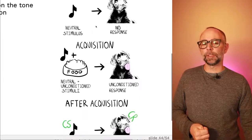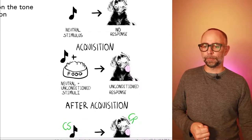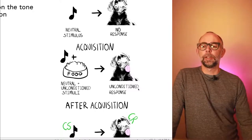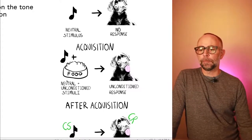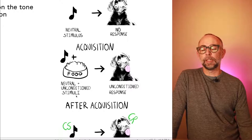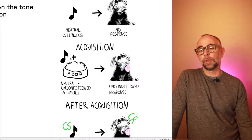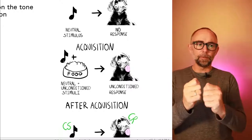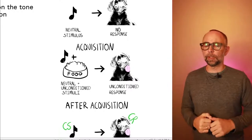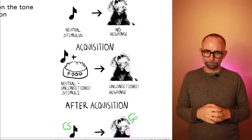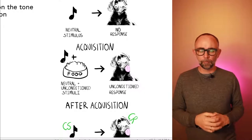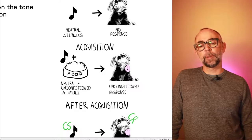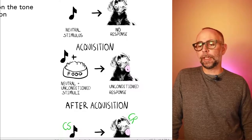That's before the acquisition procedure. Let's take a look at the acquisition procedure. It's right here. Just this one. Now, during the acquisition phase, there is a pairing of the neutral stimulus and the unconditioned stimuli. In other words, the tone and the food are paired together. So every time the dog gets the food, here's the tone. And of course, we already know what happens when the dog gets the food. The dog does a little bit of salivating.